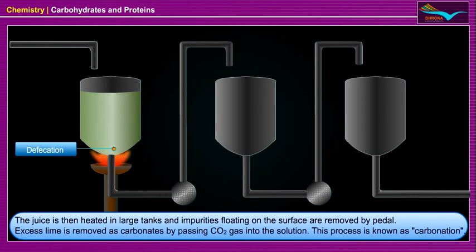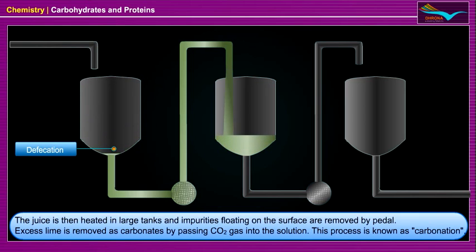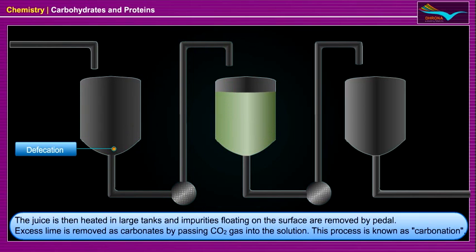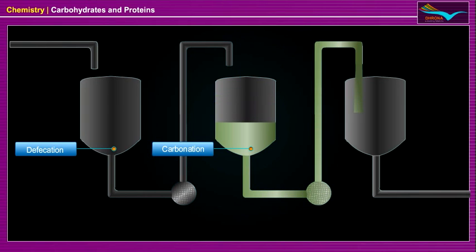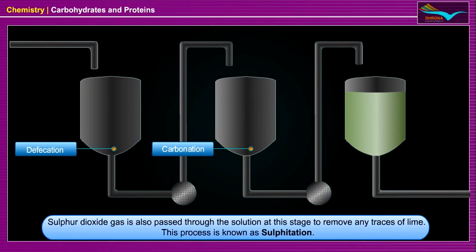The juice is then heated in large tanks and impurities floating on the surface are removed. Excess lime is removed as carbonates by passing CO2 gas into the solution. This process is known as carbonation. Sulfur dioxide gas is also passed through the solution at this stage to remove any traces of lime. This process is known as sulfitation.